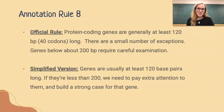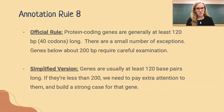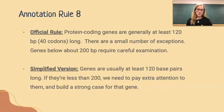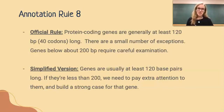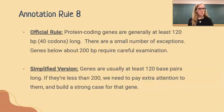The eighth rule reads: genes are usually at least 120 base pairs long. If they're less than 200 base pairs, we need to pay extra attention and build a strong case for that gene. If a gene is fewer than 200 base pairs but still more than 120, it could still be a gene, but we need to be extra careful in building our case. If it's less than 120 it is not a legitimate gene, but if it's more than 200 you're probably good to go.